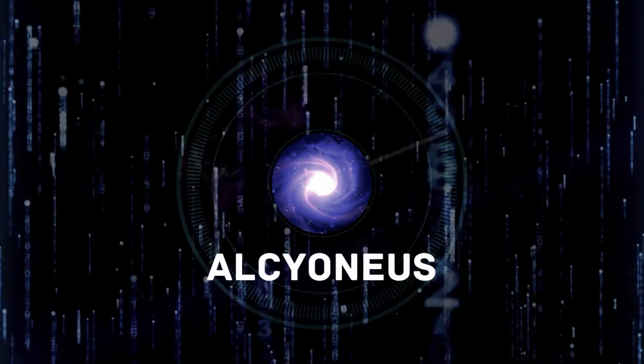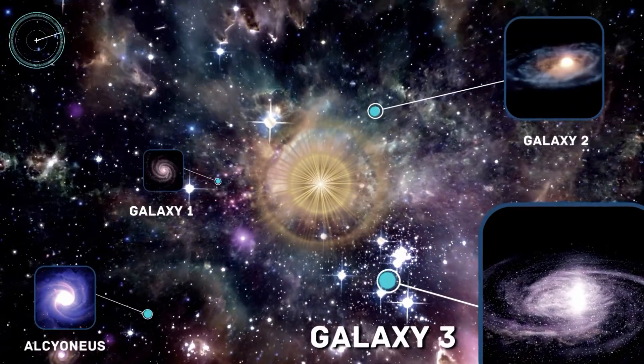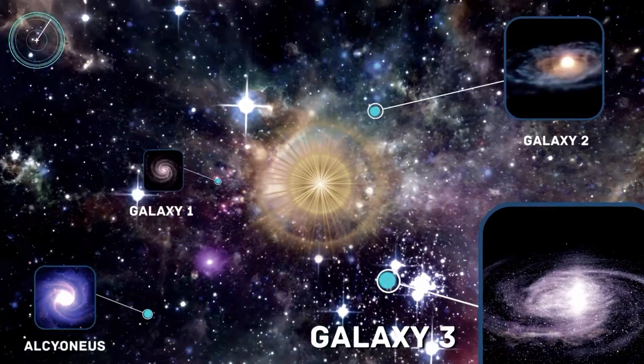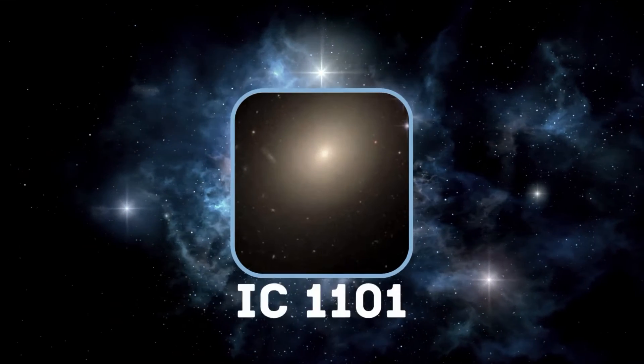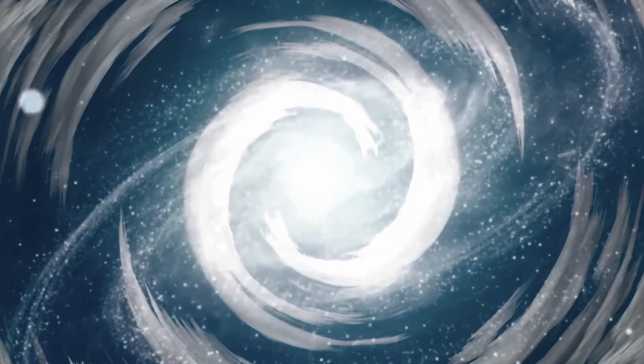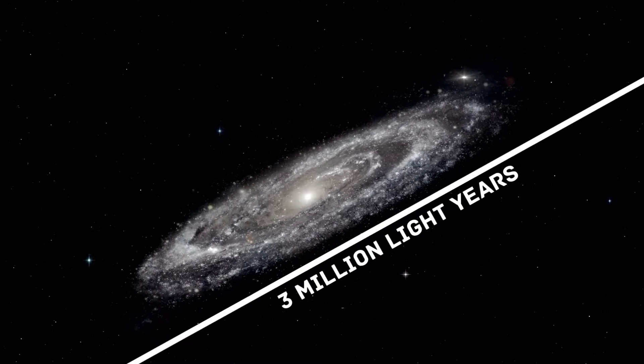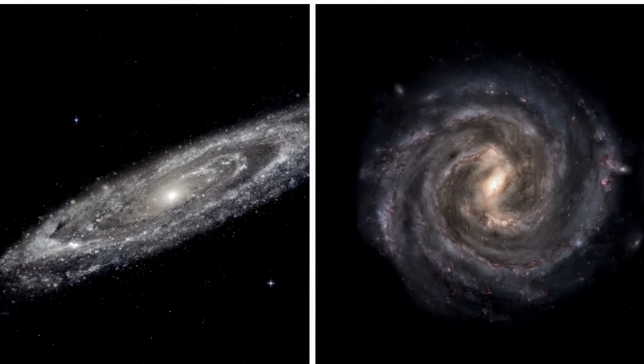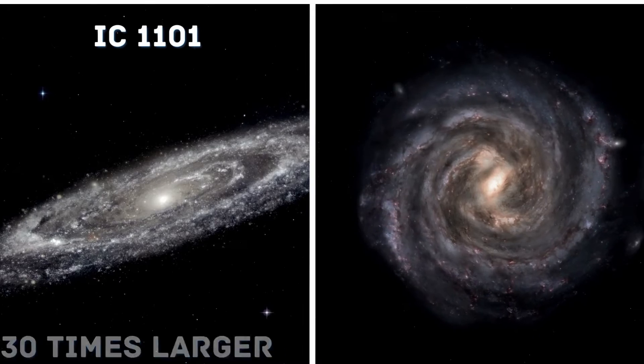Even though Alcyonius is the most enormous radio galaxy discovered to date, it's not the largest galaxy ever found in the observable universe, in terms of the extent of its stars. That title belongs to IC 1101, just 1 billion light-years away from Earth. This supergiant elliptical galaxy has a radius of about 3 million light-years at its greatest extent. Compared to our own Milky Way galaxy, IC 1101 is 30 times larger.